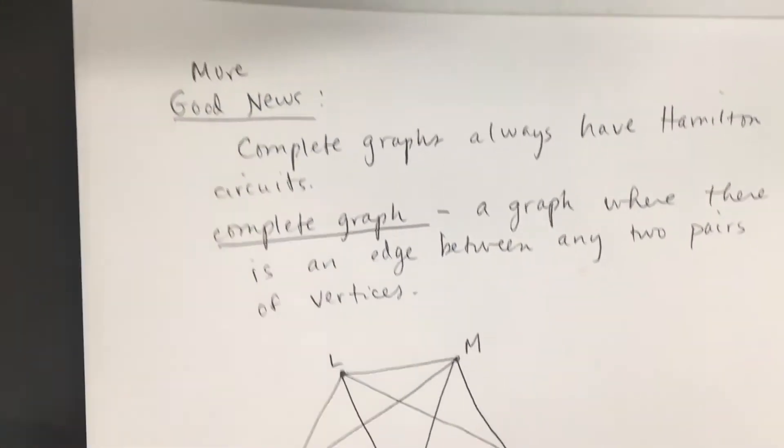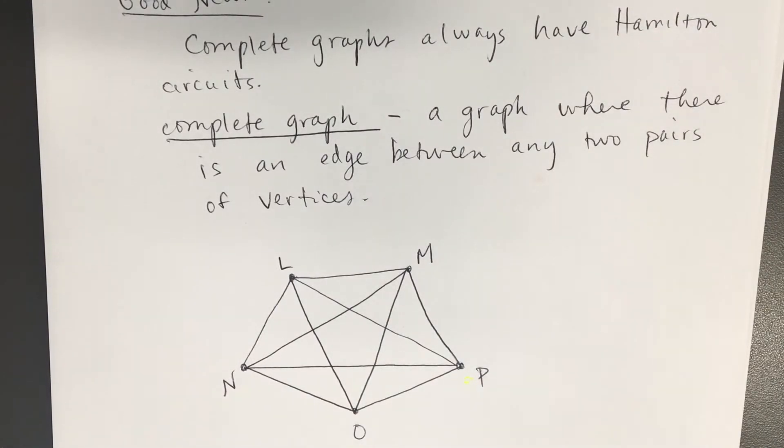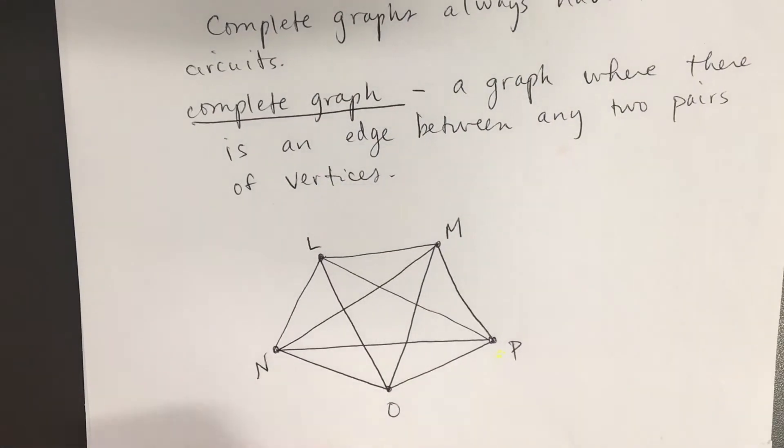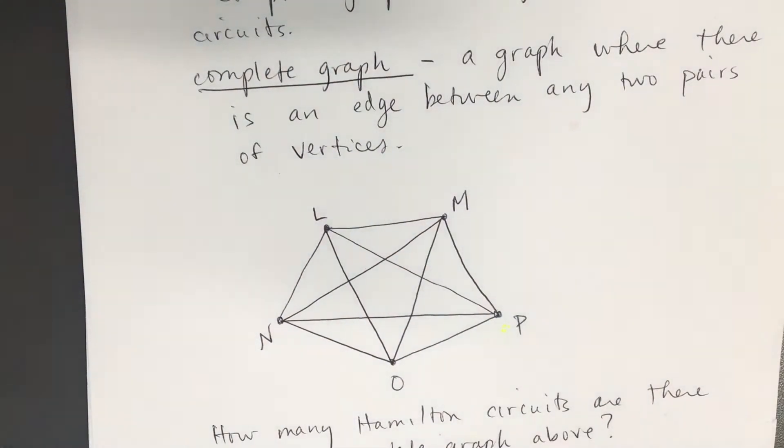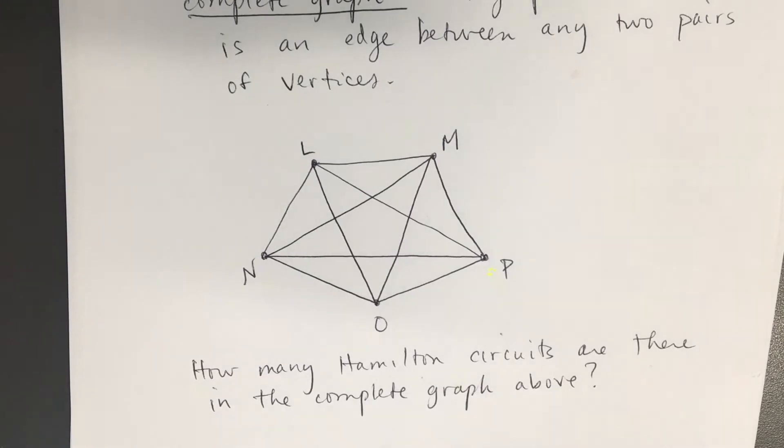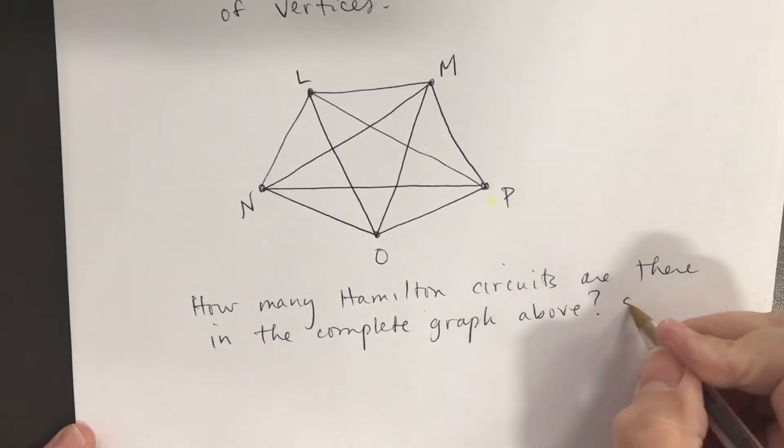Here's my graph and I want to say suppose that I live at L and I want to answer this question. How many Hamilton circuits are there in the complete graph that's above? And I mentioned, I said okay I'm going to say I live at L. They're going to tell you which one to start with or they're going to assume that you're starting at a particular vertex. I'll write start at L.